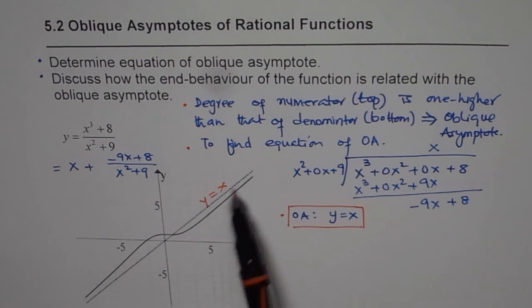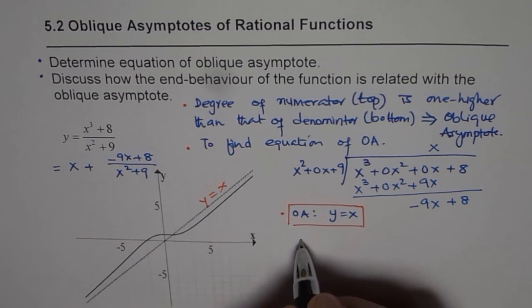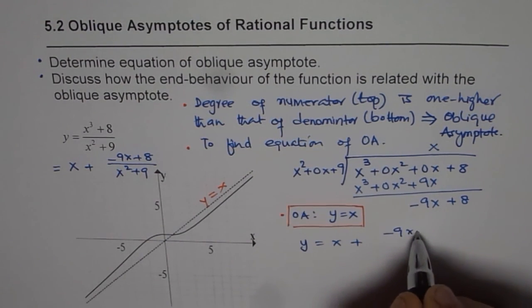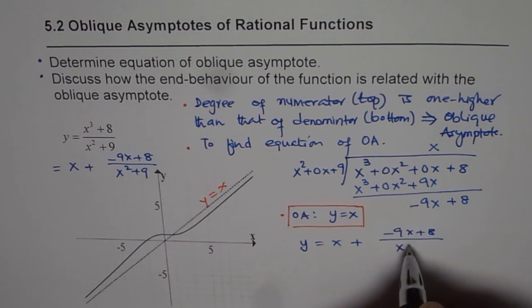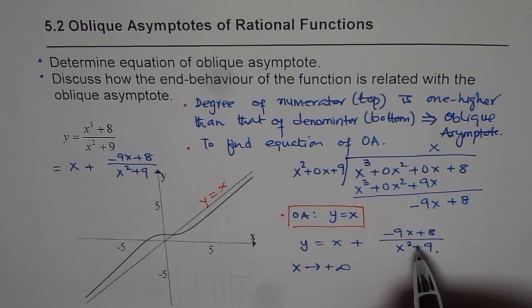Now let's understand the end behavior. What happens in this particular equation, we have y equals to x plus minus 9x plus 8 divided by x squared plus 9. Now if x is very large positive value, then what happens? This denominator is positive.